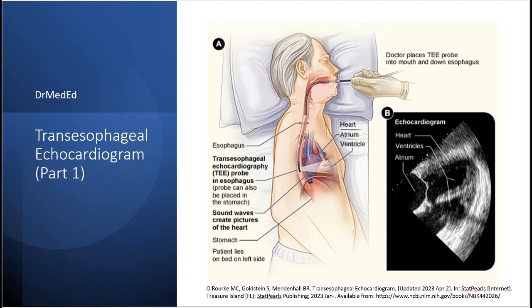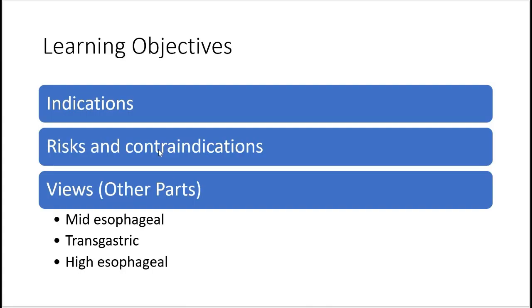Hello everyone, Dr. Matt Ed. Today we'll talk about transesophageal echocardiogram part 1. The TEE probe goes into the mouth and down the esophagus, and the heart sits right in front of the esophagus, so we can take pictures of the heart through the esophagus created by sound waves of the echocardiogram.